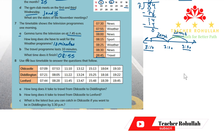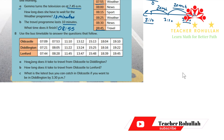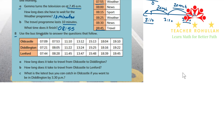Let's move to question eight. It says: use the bus timetable to answer the questions. The stations are Old Castle, Didlington, and Lenford. These are buses moving from stations at specified times. In part A, it asks: how long does it take to travel from Old Castle to Didlington?